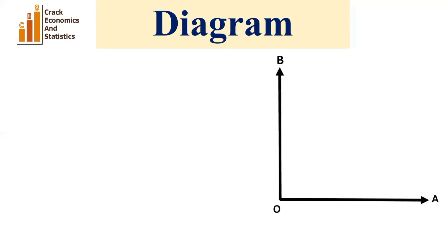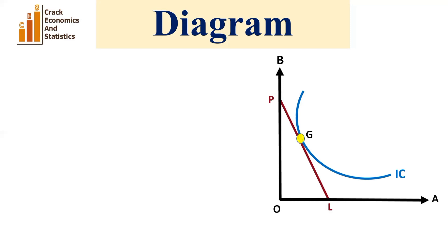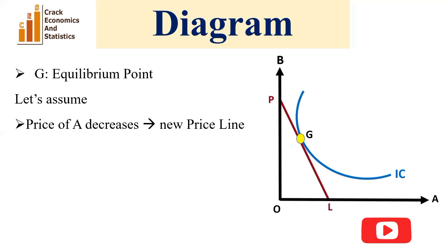Commodity A is measured along the X-axis and commodity B is measured along the Y-axis. PL is the price line and IC is the indifference curve. G is the equilibrium point because at this point the price line is tangent to the indifference curve. Now let's assume the price of A decreases.